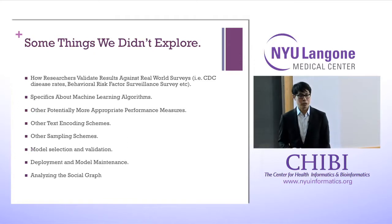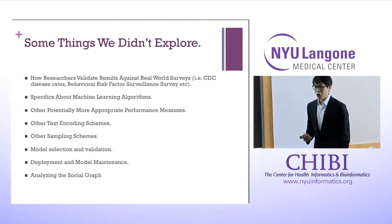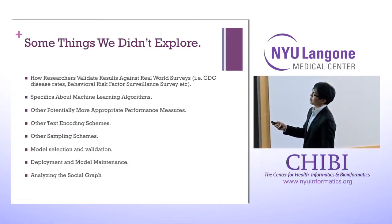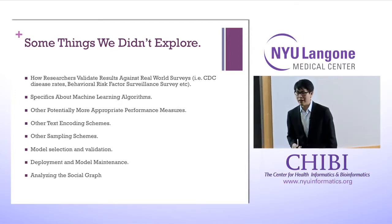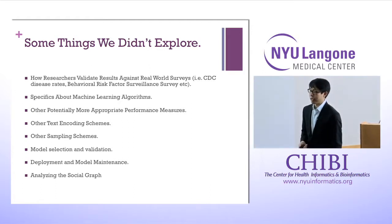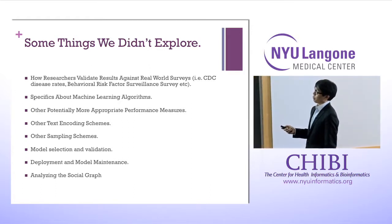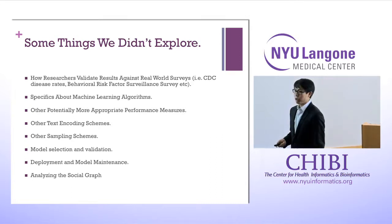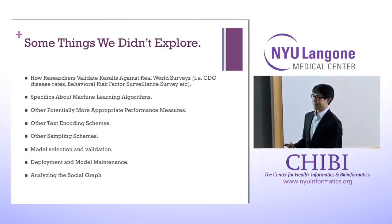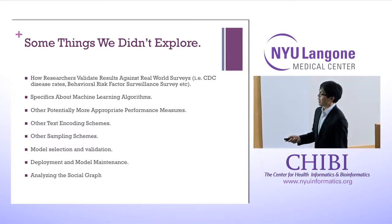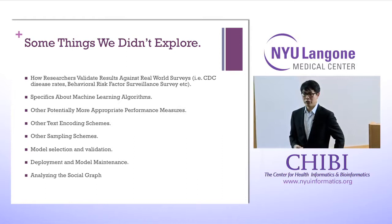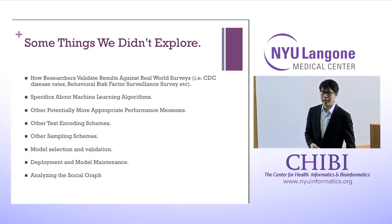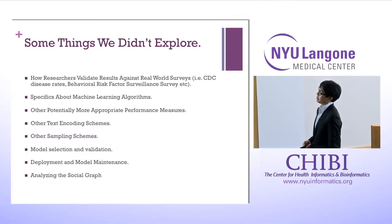We've looked at example applications and talked about machine learning, but there are many things we didn't discuss: how researchers validate results against real-world surveys, specifics of machine learning algorithms, more appropriate performance measures, other encoding and sampling schemes, model selection and validation, how you deploy and maintain a model so it continues to function, and analyzing social graphs. Twitter gives you the people you follow and who follows you, and there are many people analyzing that graph to find information about users.